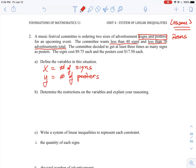The committee wants less than 40 signs and less than 70 in total. And the committee decided to get at least three times as many signs as posters. So that's an important piece of information here. There is going to be - the value of the signs or the number of signs is going to be three times as much as the number of posters. The signs cost $9.75 each and the posters cost $17.50 each. So this is going to be part of our objective function here, those values. That's what we're going to end up optimizing.